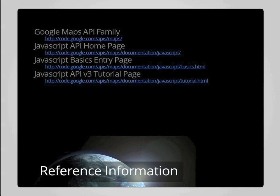Here we have listed a number of links to the background information that Google publishes on their various APIs, and more detailed reference information about the JavaScript API in particular: the homepage for the JavaScript API, an introductory page providing basics about using the API, and a link to the tutorial for working with the API. These are valuable resources as you want to dig deeper into the capabilities of the Google Maps API.